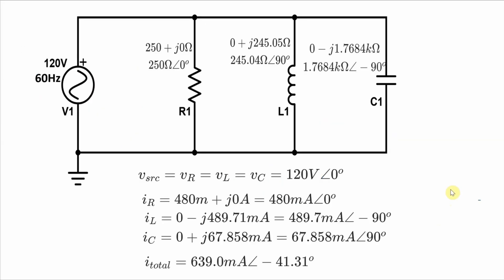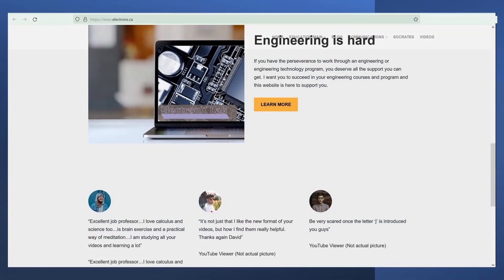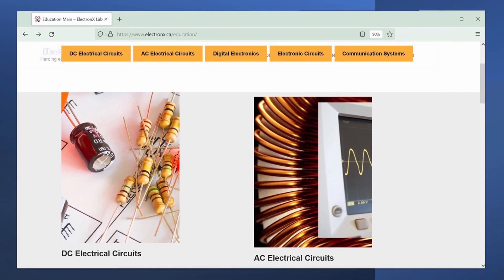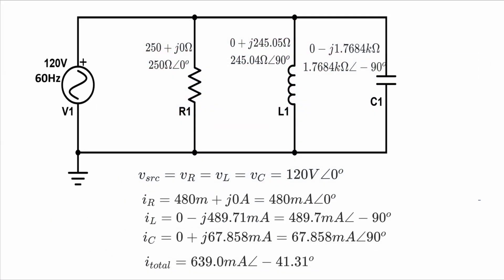In summary, here are all of the values I calculated: all of the impedances, the voltages across each component, the currents through each component, and finally the total current from the source. This example came from a free online open source textbook, and you can find a link to that textbook in the description. There you'll find other materials including more examples like this for AC and DC circuits, as well as links to other video tutorials. I really appreciate you watching — see you next time.